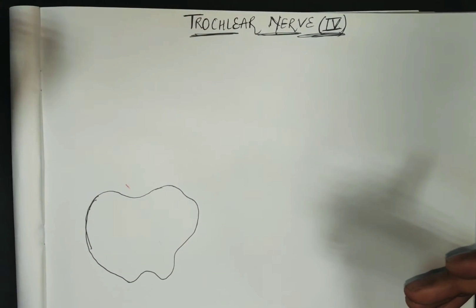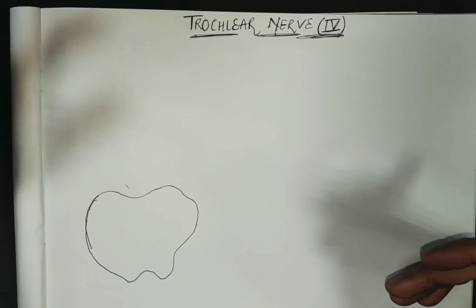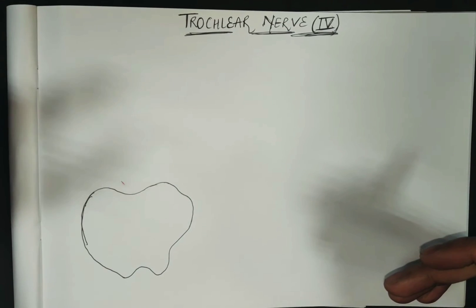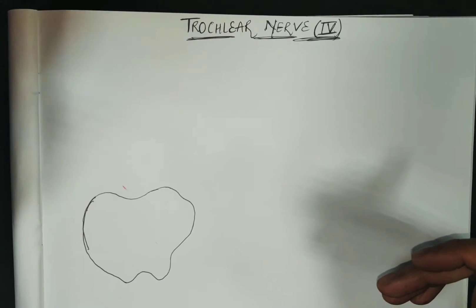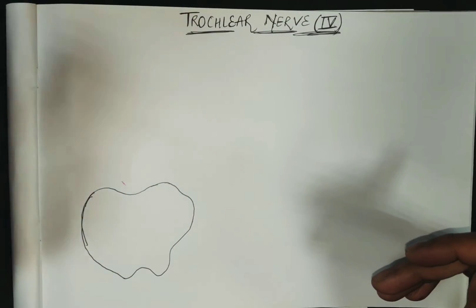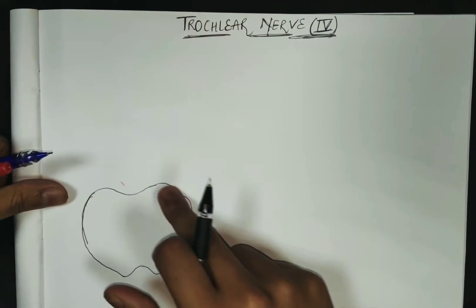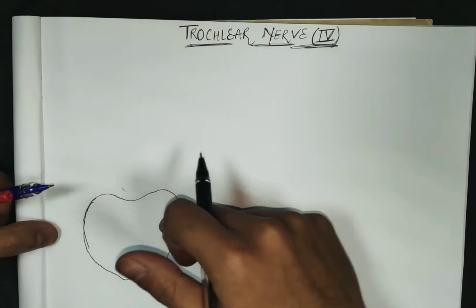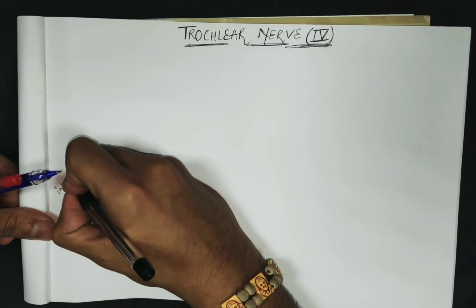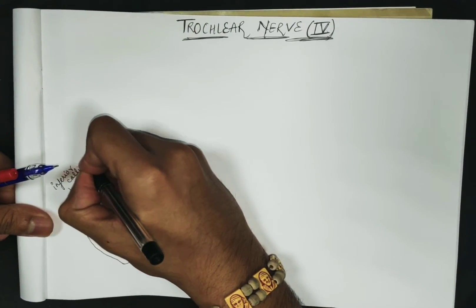The nucleus of the trochlear nerve, which we discussed in our rhomboid fossa nucleus video, is the dorsal motor nucleus. It is located at the level of the inferior colliculus of the midbrain, on the posterior surface of the midbrain. Here you can see the inferior colliculus level.